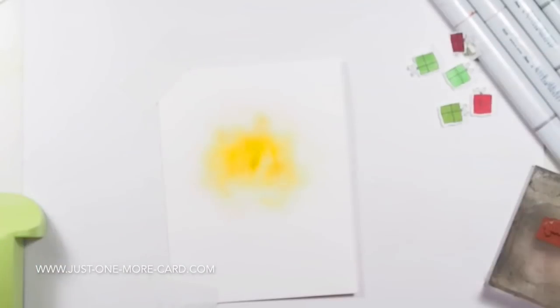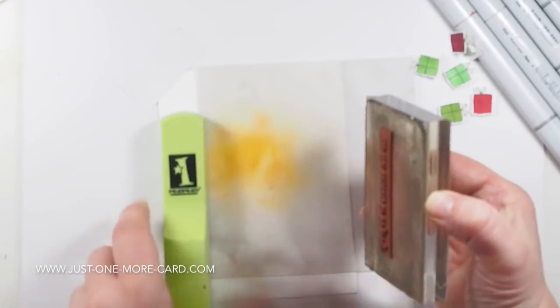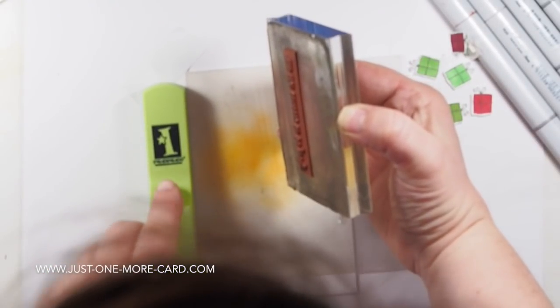Now before I put down the gift packages, I'm going to stamp my sentiment. And this is going to be a bit tricky. So I'm using a stamp-a-ma-jig to make sure that I place the sentiment right. Since it's a rubber stamp, I can't look through it. I can't see how it's lining up. So I have this sheet of plastic that comes with the stamp-a-ma-jig.